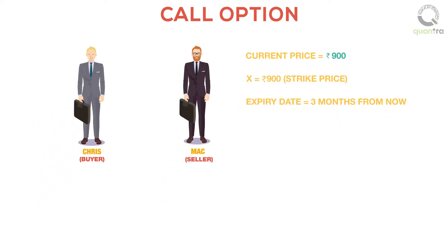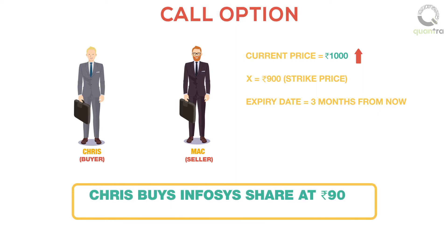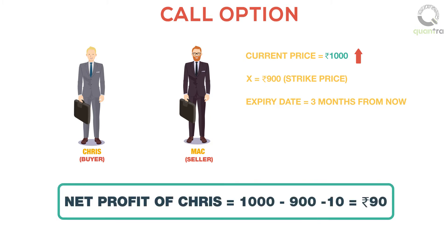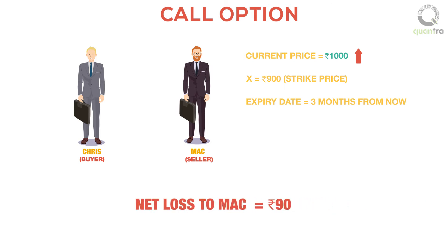Now let us look at the different scenarios. Suppose the price of Infosys on the expiry date is Rs.1000. Chris will exercise the option, since he has the right to exercise. In this case, Chris will buy the stock from Mac at Rs.900, and Mac is obligated to sell at Rs.900 as per the agreement. The net profit to Chris is Rs.90, that is Rs.1000 minus Rs.900 minus the premium paid of Rs.10. Similarly, the loss to Mac is Rs.90.